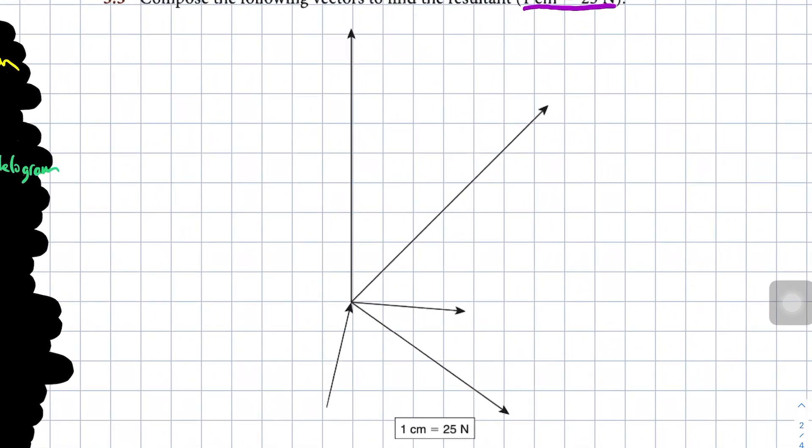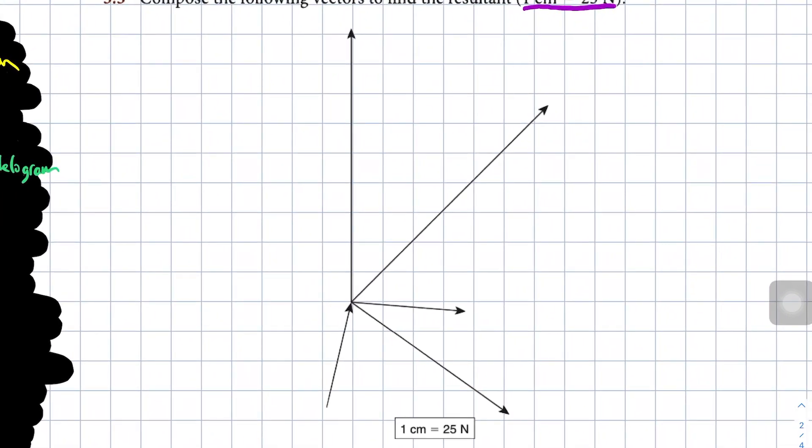So first the parallelogram method. What I will do is trace two of the vectors whose tails are already touching and use those new lengths to create a parallelogram and then trace the diagonal. So I have two sides of the parallelogram. I'm going to duplicate those.